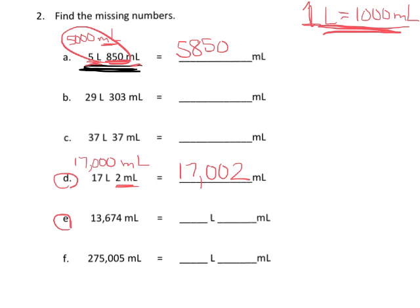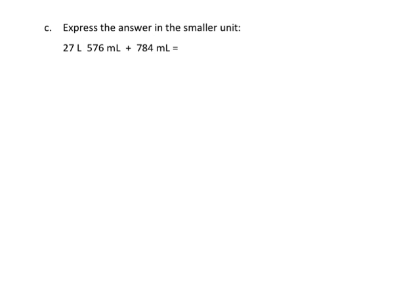...we're going to turn that into a mixed measurement. Those thirteen thousand milliliters equal thirteen liters — we're just going in reverse of what we did before — so that's thirteen liters and we're going to have 674 milliliters left over.